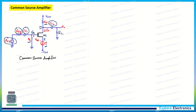This is called a common source amplifier because the source is common between the input and output sides. We apply input from gate to source and take the output from drain to source — hence the name common source amplifier.